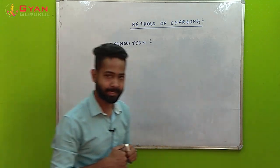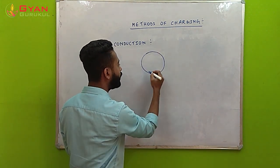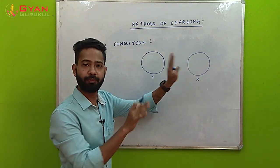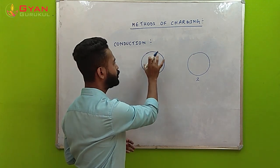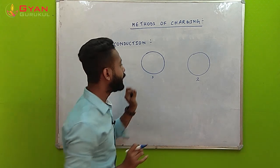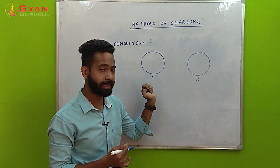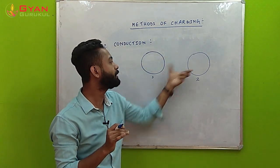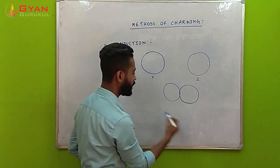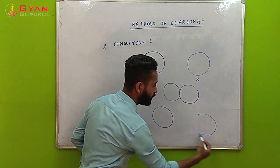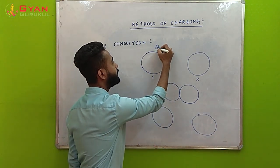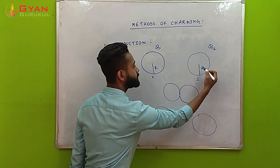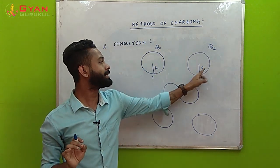Let us understand this by an example. I have body one and body two — these are identical bodies, two conducting spheres. Both of the bodies will have uneven number of charges and we'll make them touch each other momentarily, then separate them. Let me say the charge on the first is Q1, the charge on the second is Q2, the radius of the first is R1, and the radius of the second is R2.